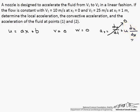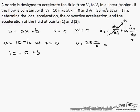So u equals 10 meters per second at x equals 0. That means 10 equals 0, ax is 0, plus b. It also equals 25 meters per second at x equals 1.